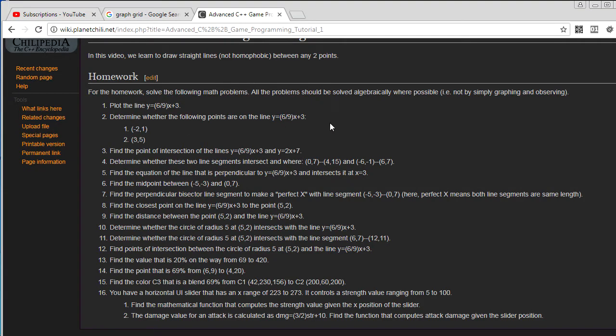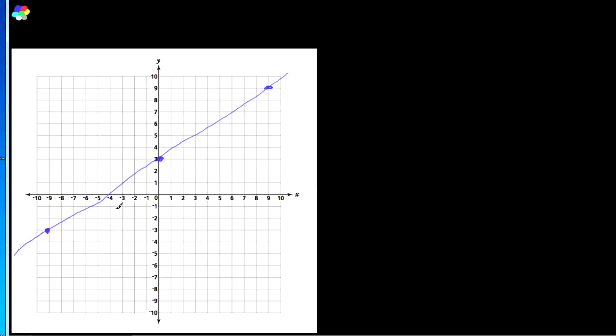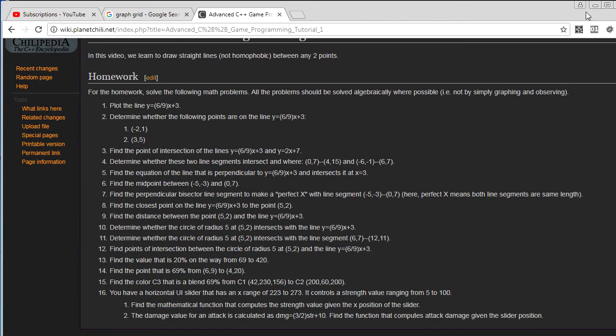Determine whether the following points are on the line: negative 2, 1, and 3, 5. You could obviously do this by inspection if you've plotted the line, but I told you, solve algebraically where possible. So I mean, just to say, we could go, you know, like, negative 2, 1, definitely not on the line, right? What was the other one? 3 and 5.